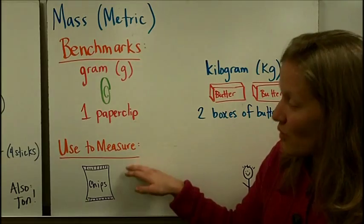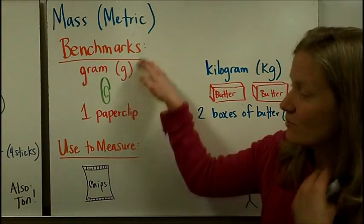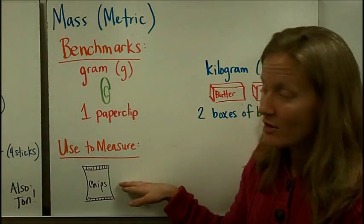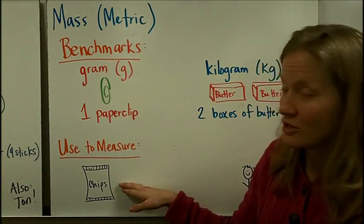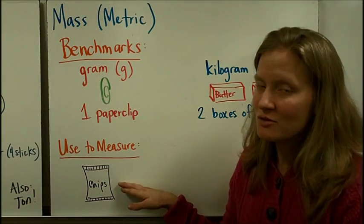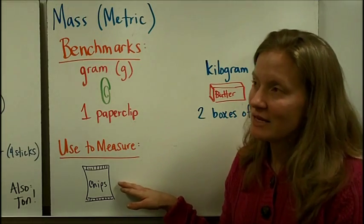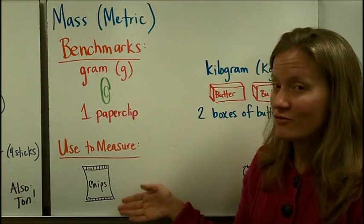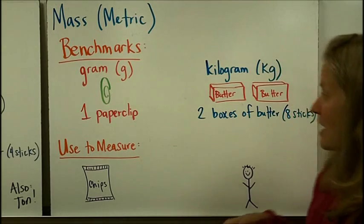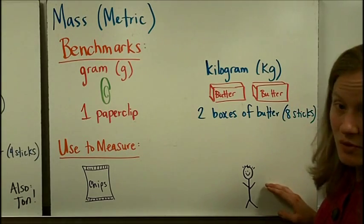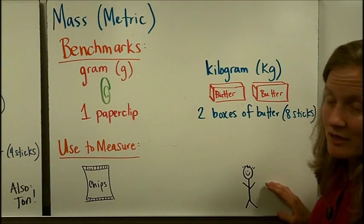Small things, like bags of chips or other food items, would be measured in grams — especially outside of the United States, where they would measure food in grams. Big items, like people, would be measured in kilograms.